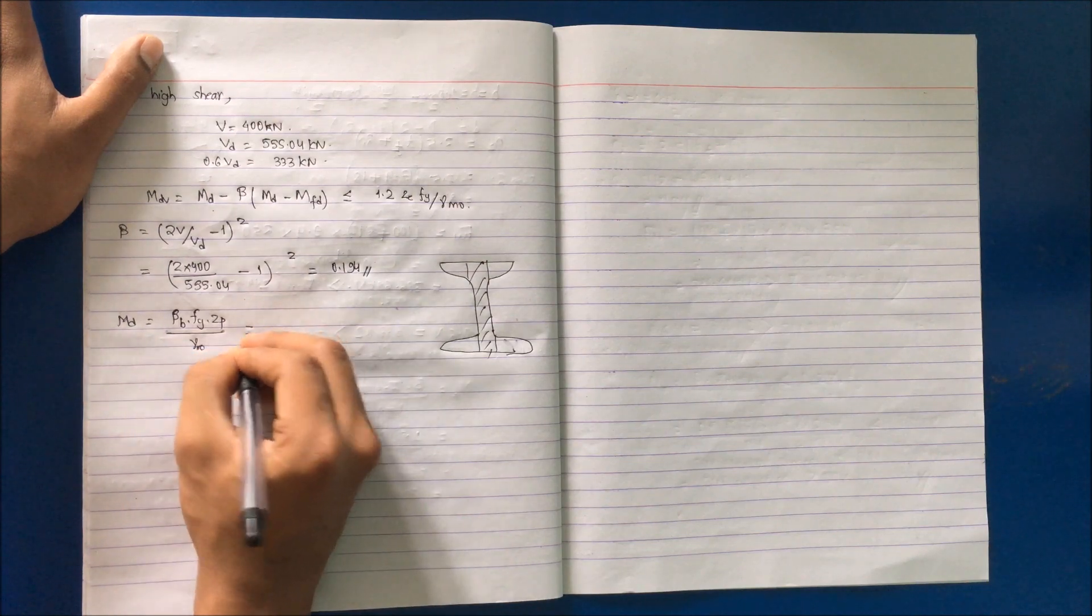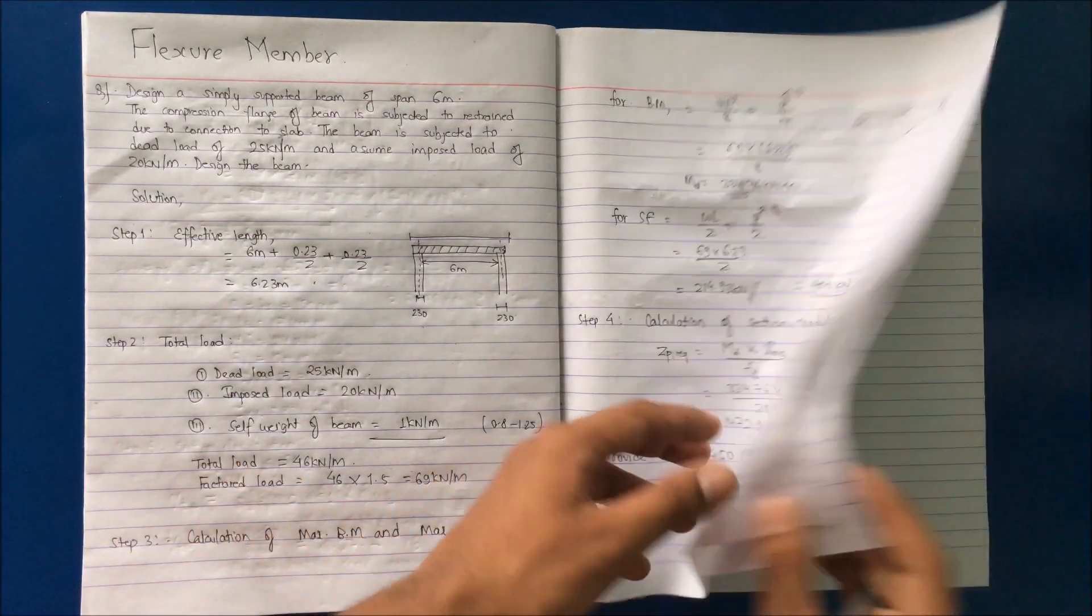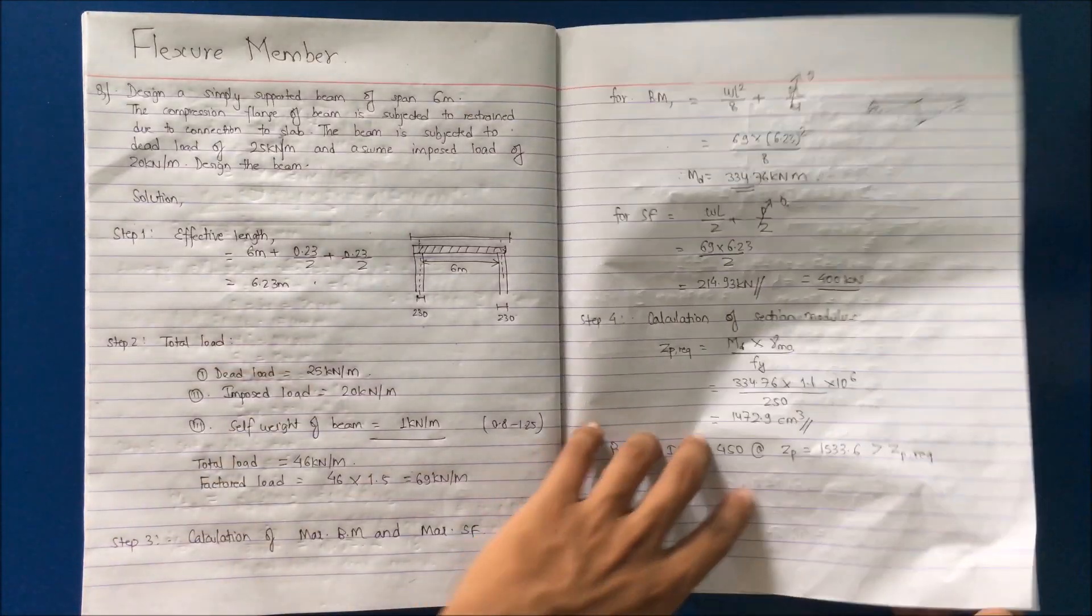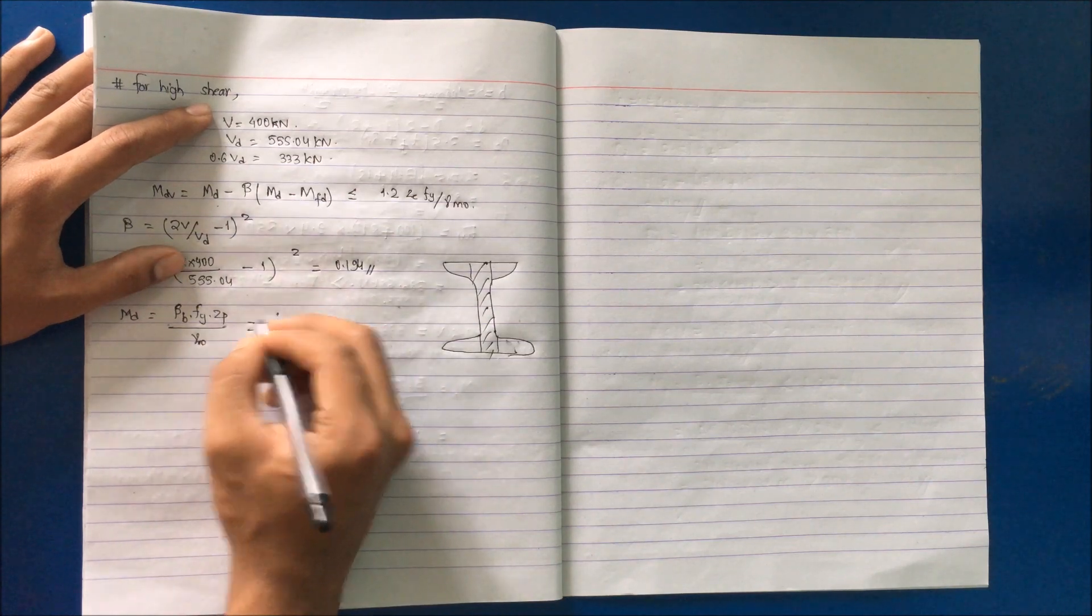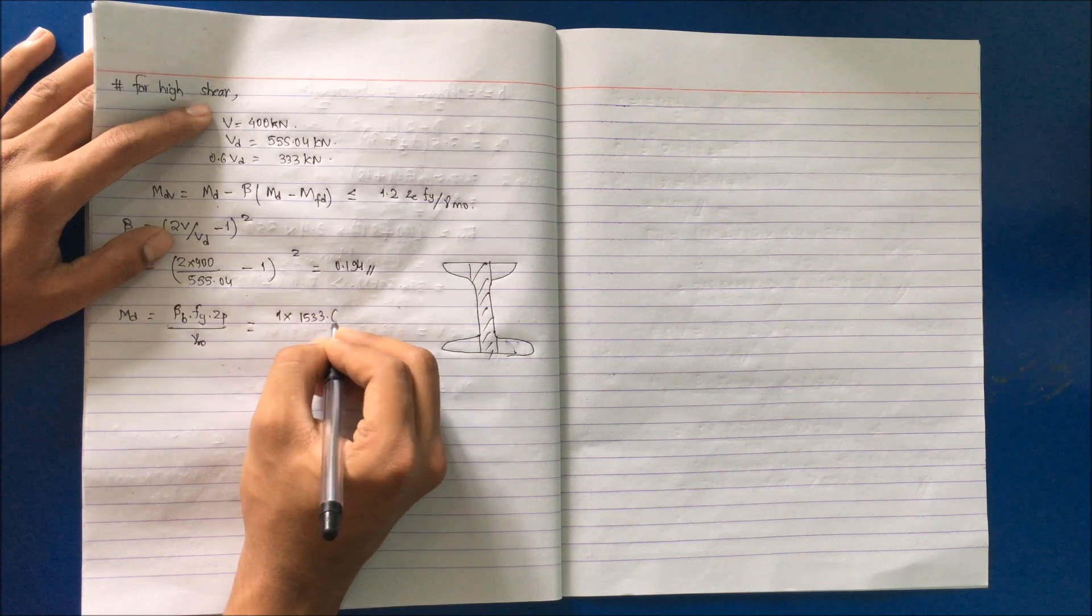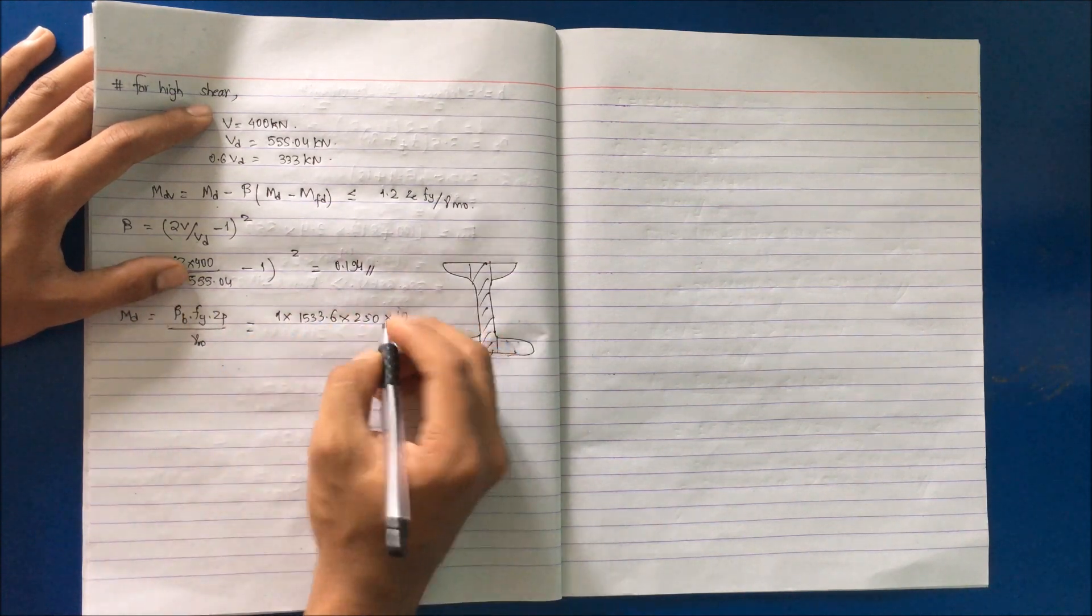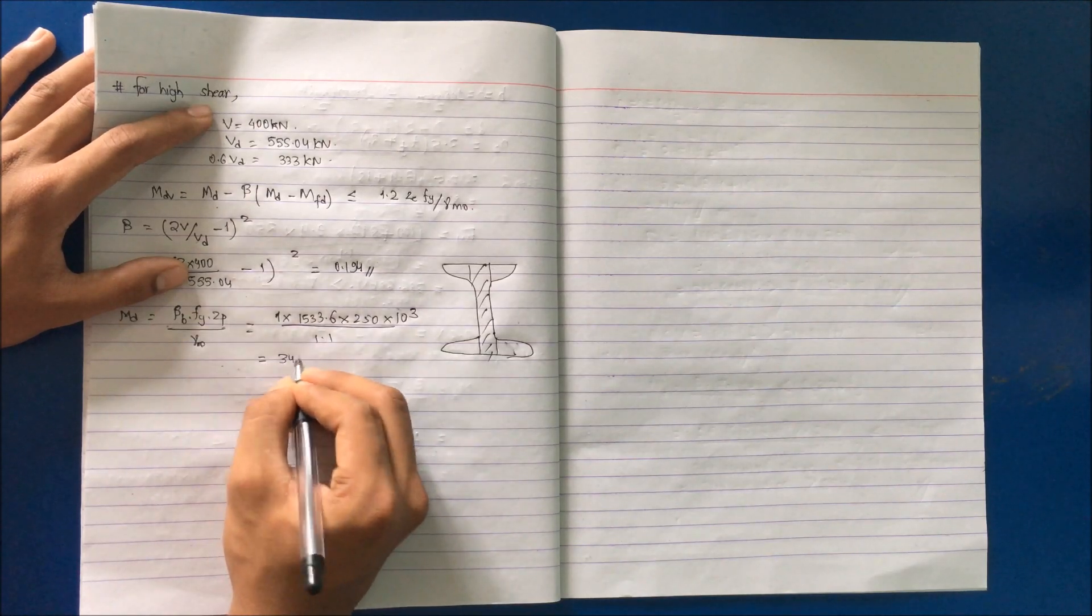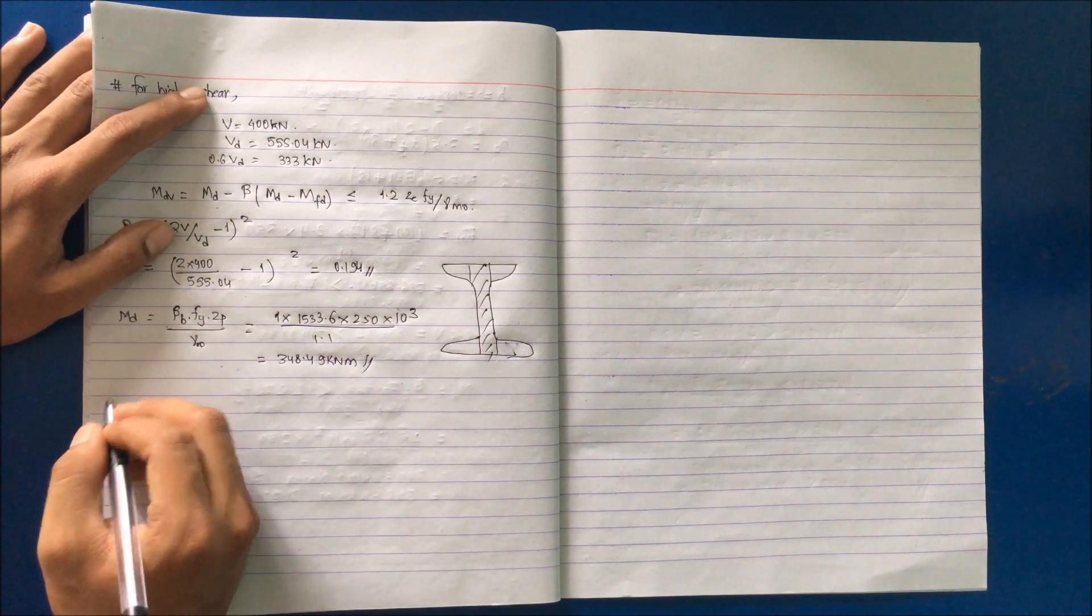MD will be calculated as beta b times fy times Zp divided by gamma m0. We know the value of Zp for the section as 1533.6. So substitute the value: beta b is 1 for plastic section, 1 into 1533.6 into 250 into 10 to the power 3 (converting centimeter to millimeter) divided by 1.1. You will get the value as 348.49 kN·m.